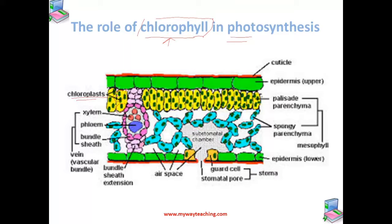It is the presence of chlorophyll which makes the leaves look green. This chlorophyll has the property that it can absorb sunlight. Chlorophyll absorbs the energy from sunlight, and that energy is used to combine carbon dioxide and water in the green leaves to produce food.